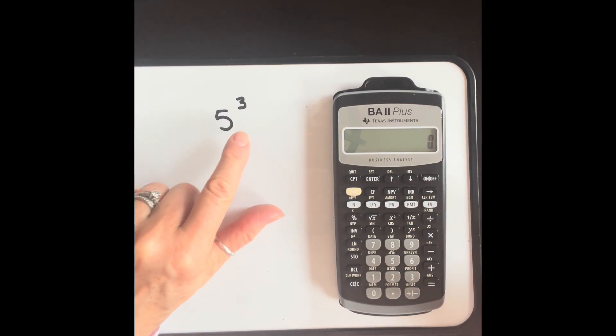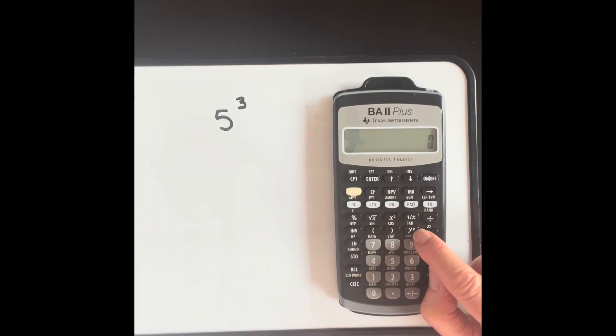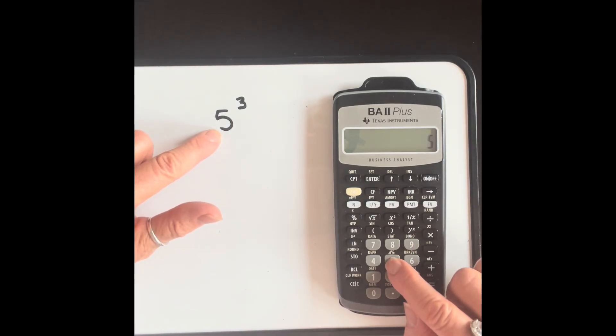If you're raising a number to a power other than two, you're going to use y to the x function. And the way you're going to do that is you put in your base first, then you're going to type that y to the x, and then you're going to put the power and equals.